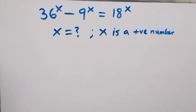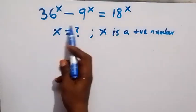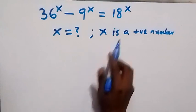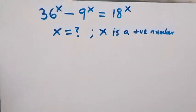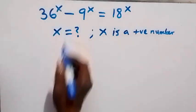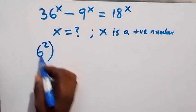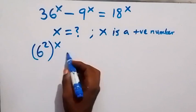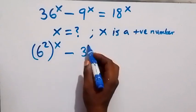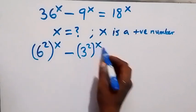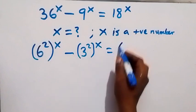Hello, you are welcome. Here we solve a nice exponential equation: 36 raised to the power x minus 9 raised to the power x equals 18 raised to the power x. We are finding the value of x, which is a positive number. Let's write this as (6²)^x minus (3²)^x equals (6·3)^x.